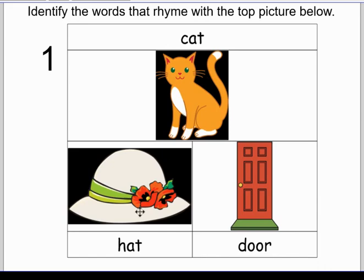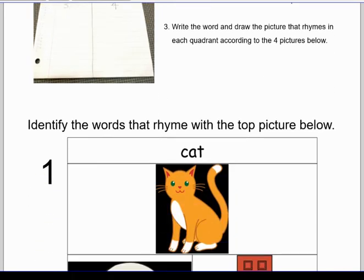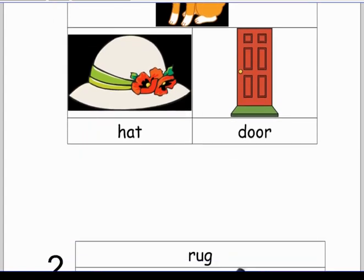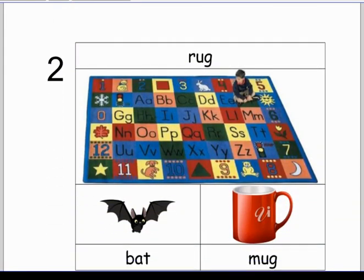They sound the same at the end. So I drew a picture of a hat in the first quadrant where it says number one. If you go back you can see I drew a picture of a hat in the first quadrant. Now I want you to do the rest of the three quadrants left on your own.